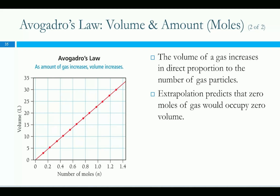The thing you might not have thought of is that if you double the number of moles, you double the volume. So 0.2 moles to 0.4 moles should be a doubling in volume. We can extrapolate this back to say that 0 moles would be 0 volume, which makes sense — if you take all the gas out, there's no more volume of gas.